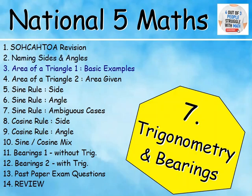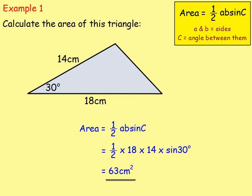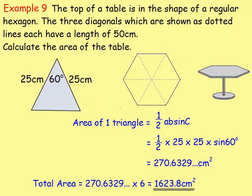We then went on to look at the area of a triangle — a non-right-angled triangle. In order to work out the area of any triangle, you can use this formula: the area equals a half AB sine C. A and B are the two sides either side of the angle which you are given. There's an example where the angle is 30 degrees and we know the sides either side of it. So it's a half AB sine C — A and B are the sides, C is the angle — work out the sine of the angle, then multiply by the half AB to get our answer.